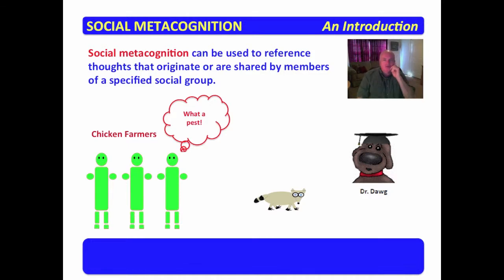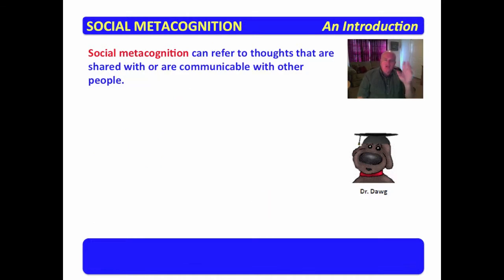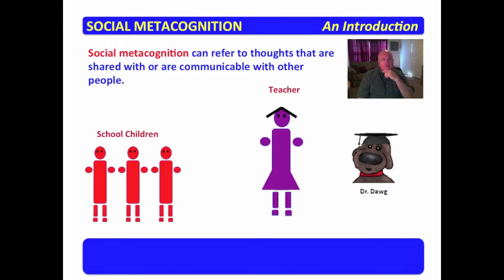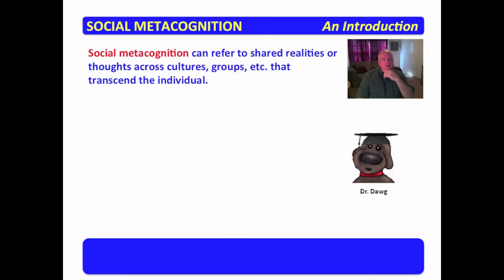Social metacognition can also refer to thoughts that are shared with or communicable with other people — they didn't just originate with them, but they can be communicated to other people. For example, a group of school children and a teacher: school children are very quick to communicate to their friends that it's us versus them — all of us against the teacher might be something that would be communicated.